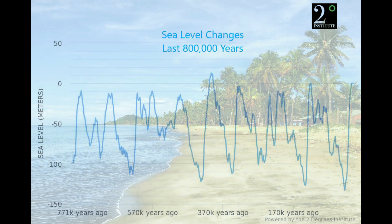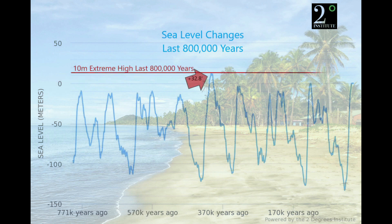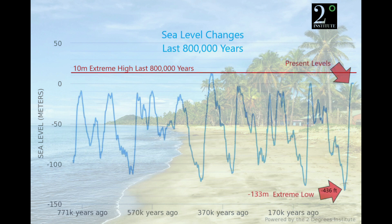Sea level changes for the last 800,000 years: the highest occurred around 400,000 years ago, and the lowest occurred right before our current time. Notice that the sea level changes are in meters. The extreme was about 10 meters higher than today, or 32 feet. We are coming off an extreme low of negative 133 meters, which is 436 feet below our current levels.